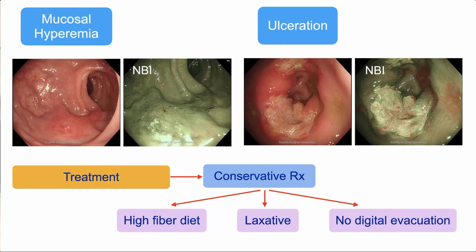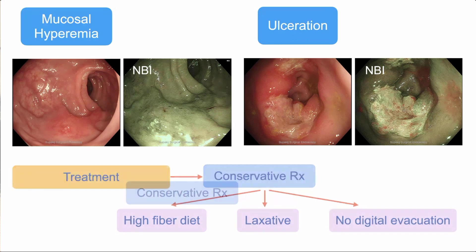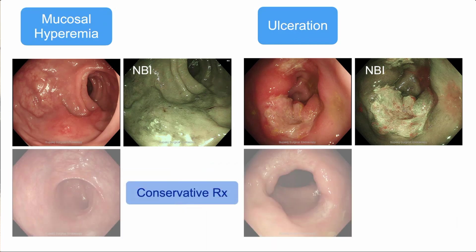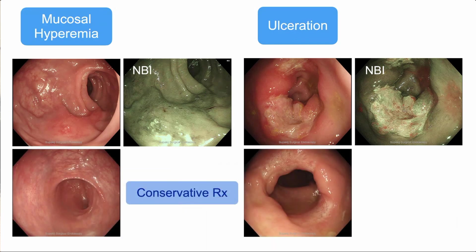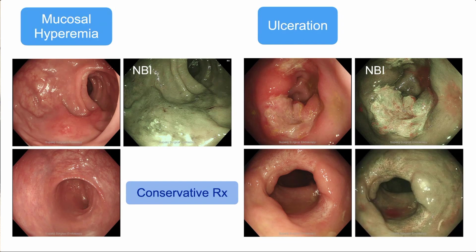We have to ask the patient to stop digital evacuation. Together with this, most patients are successful. As I showed you in this picture, after conservative treatment in both patients, you can see from the colonoscopic findings that the lesion was gone and the mucosa had healed on the right side. NBI diagnosis confirmed that everything was gone and the mucosa was healing.